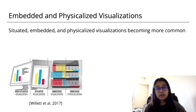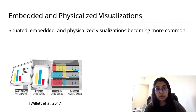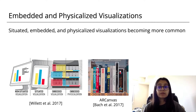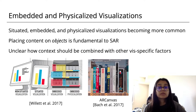Situated, embedded, and physicalized visualizations that have a tight coupling between the underlying data and the physical location in the environment are becoming much more common. Visualization frameworks, pipelines, and typologies are all useful tools to aid in the design of visualizations. AR Canvas, for example, is a framework for creating pervasive and embedded information visualizations for augmented reality. However, we believe a SAR-specific framework is still necessary to address the challenges related to coordinating and sharing views between people, the lack of floating views, as well as this emphasis on context-driven interactions.